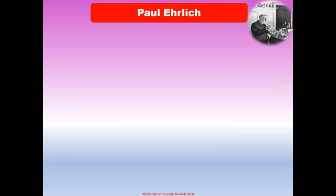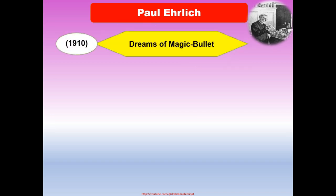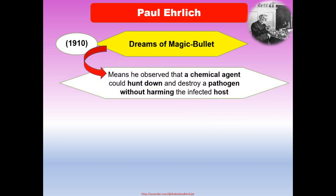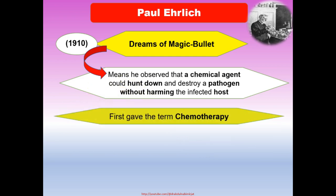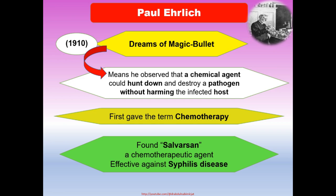Paul Ehrlich, a German scientist, gave the idea of a 'magic bullet' — meaning he observed that a chemical agent could hunt down and destroy a pathogen without harming the infected host. He first coined the term chemotherapy and found Salvarsan, a chemotherapy agent effective against syphilis disease.